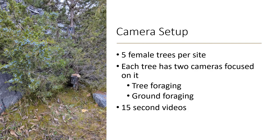At each of my sites I've chosen five female trees that have blueberries on them, and each tree has two cameras. The tree camera at the top focuses on branches with berries to capture which species are removing berries from the branches. The ground camera is focused on the ground to observe organisms foraging or passing by and whether they're taking berries with them. The videos are 15 seconds long, and I have several undergraduate students helping me sort through the data. I visit sites every three weeks to replace batteries and SD cards — with 32 gigabytes per card and 10 cameras per site, we have hundreds of gigabytes of data to sort through.